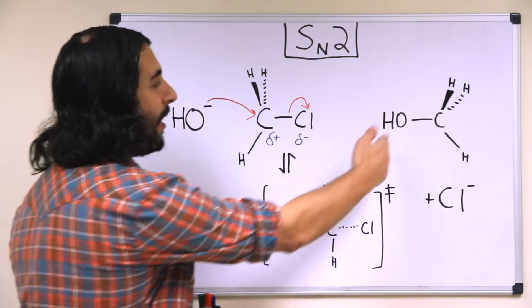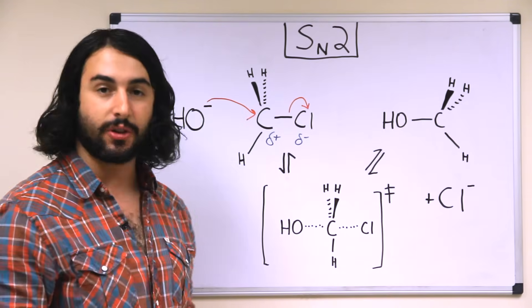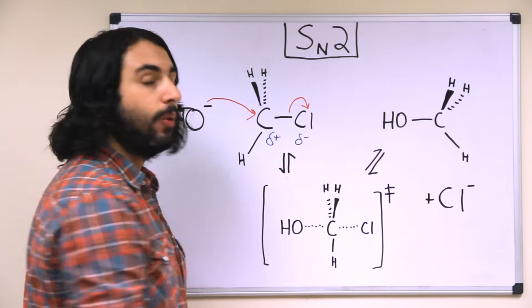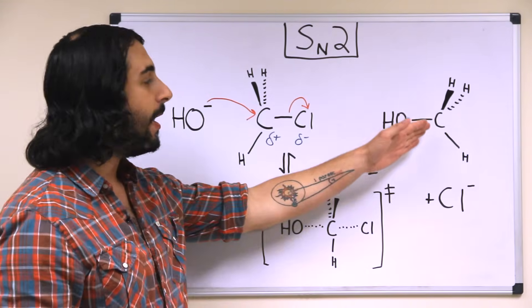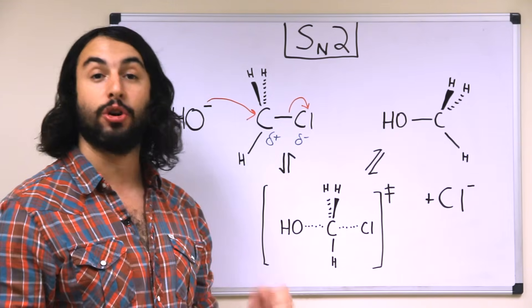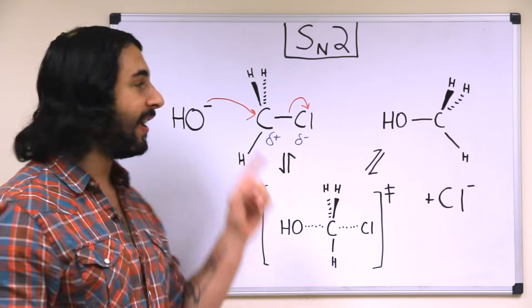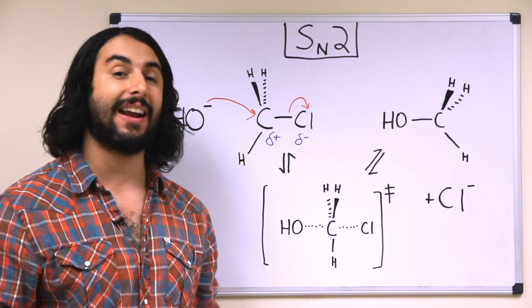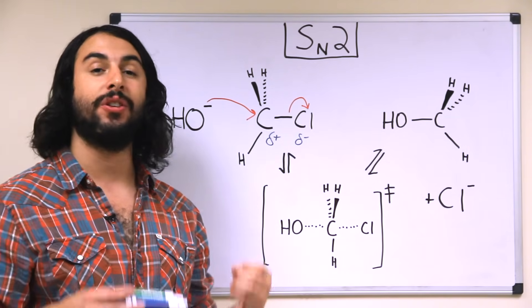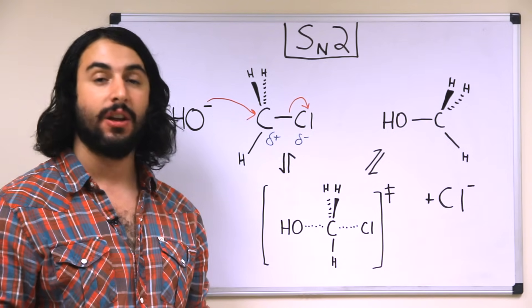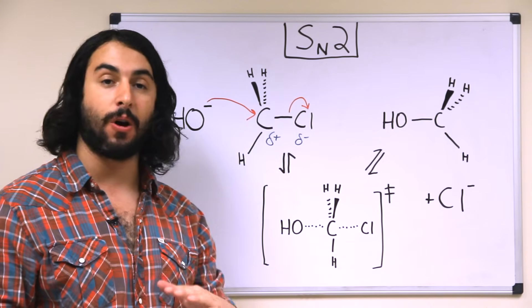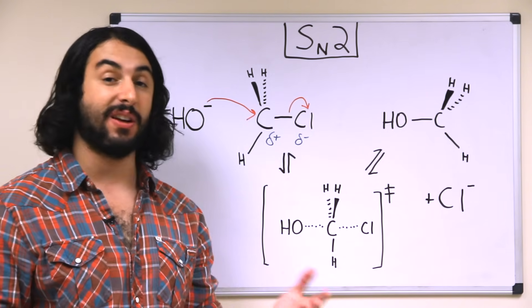And then as the bond materializes between the oxygen and the carbon, the chlorine leaves, we return to sp3 tetrahedral geometry. But we do have an inversion at that center. So if SN2 occurs at a chiral center, it will necessarily invert the stereochemistry there. So if it was R, the product will be S or vice versa.